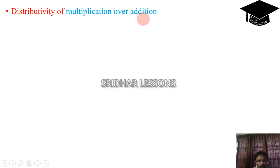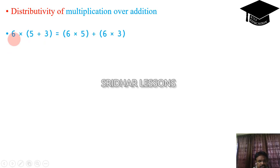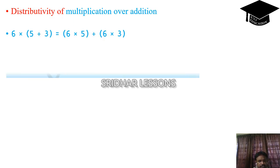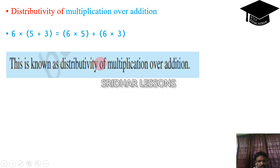Distributivity of multiplication over addition. See this example: 6 into (5 plus 3), where 'into' means multiplication and 'plus' refers to addition. Distributivity means 6 into (5 plus 3) is equal to 6 into 5 plus 6 into 3. This property is called the distributivity of multiplication over addition.